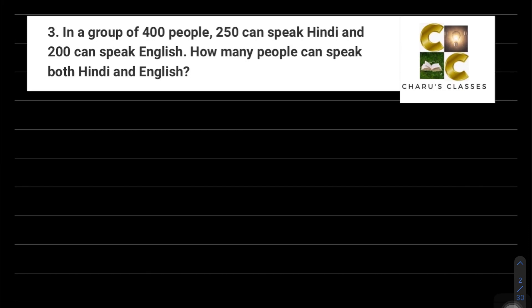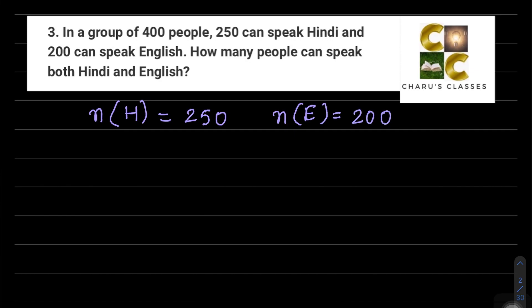Question number 3: In a group of 400 people, 250 can speak Hindi — so n(H) = 250 — and 200 can speak English, so n(E) = 200. How many people can speak both Hindi and English? Here n(H∪E) is given as 400.